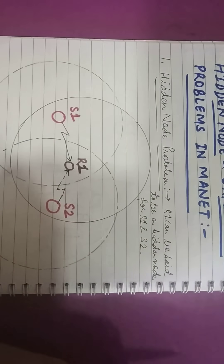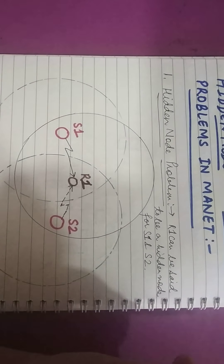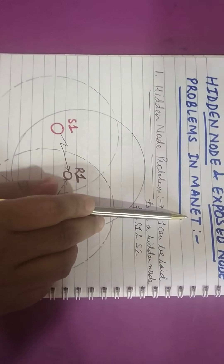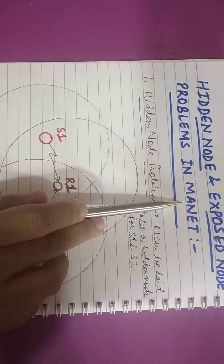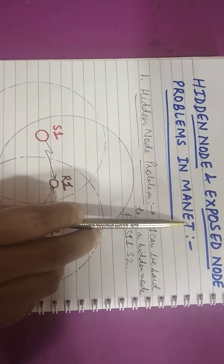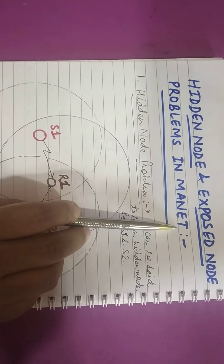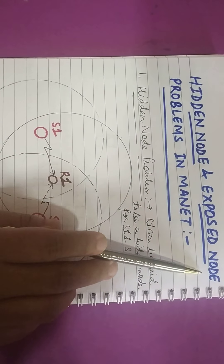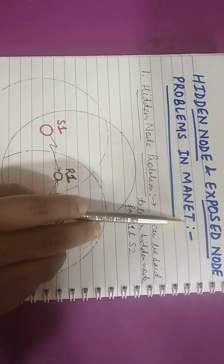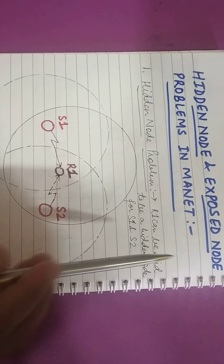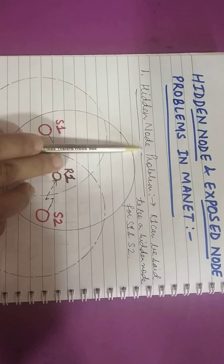Hello students. In my previous lecture I talked about mobile ad hoc networks, that is MANETs, and also about the network architecture of MANETs. Today I will talk about a very important concept: the hidden node and exposed node problem in mobile ad hoc networks. First of all, I will tell you what the hidden node problem is.